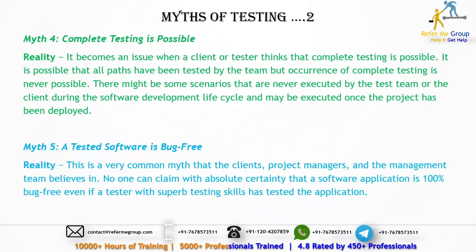Another myth is that complete testing is possible. No, complete testing is not possible. It becomes an issue when a client or tester thinks that complete testing is possible. It is possible that all paths have been tested by the team, but the appearance of complete testing is never fully achievable. There are multiple levels of testing — unit testing, system testing, system integration — through which you achieve the objective of testing.